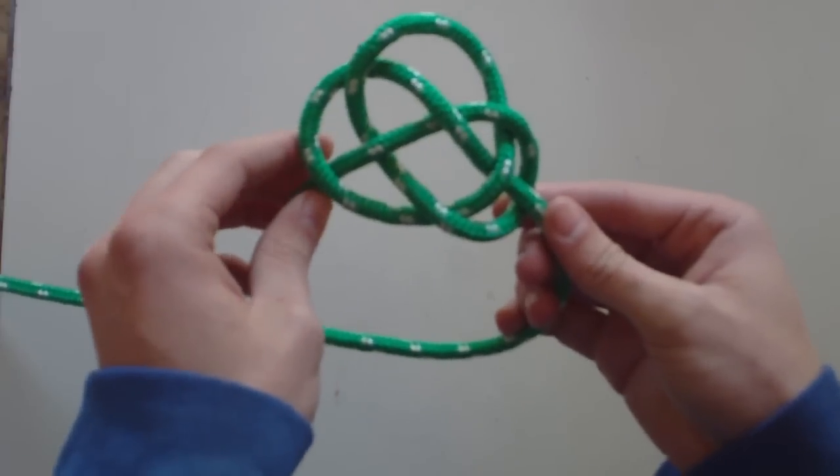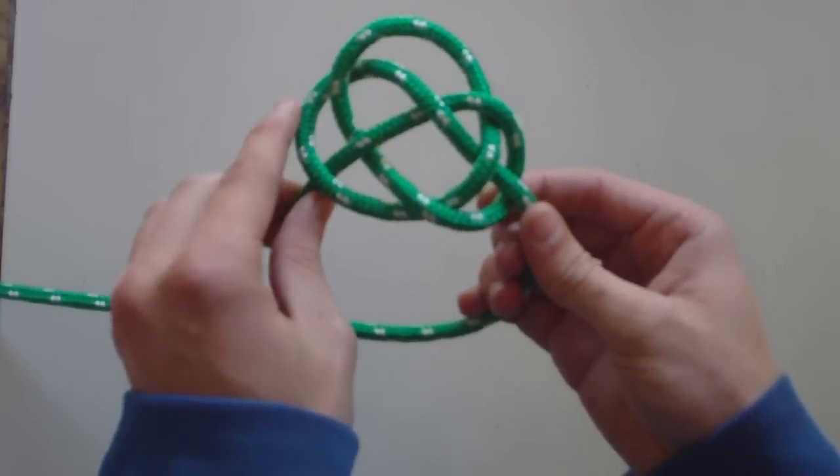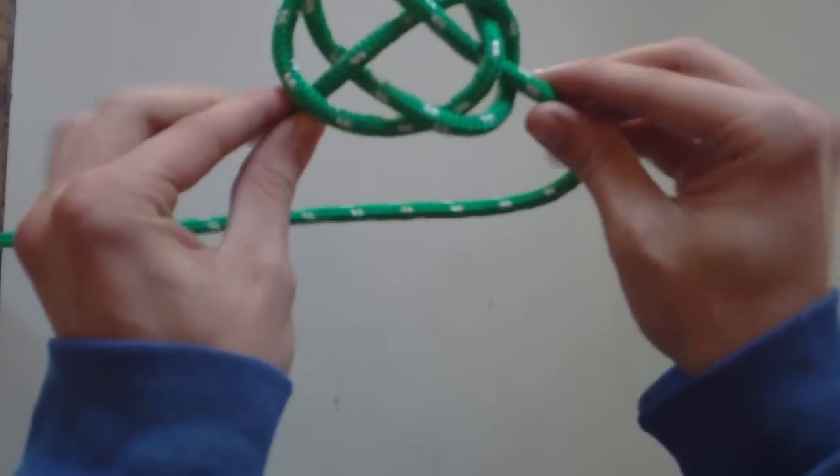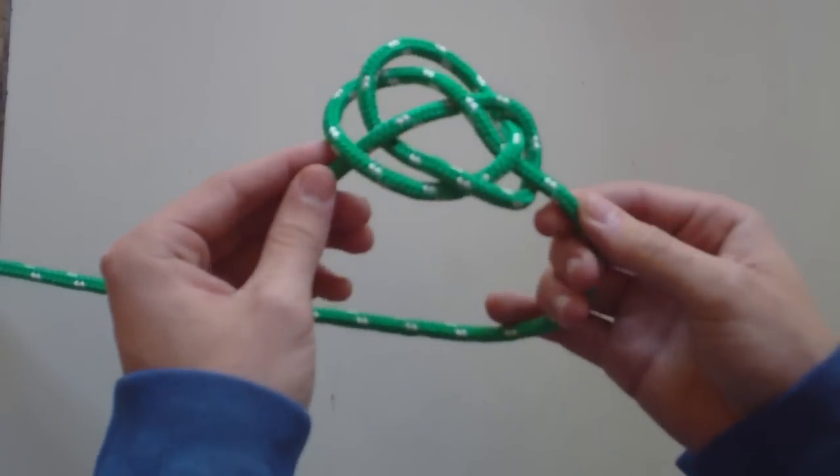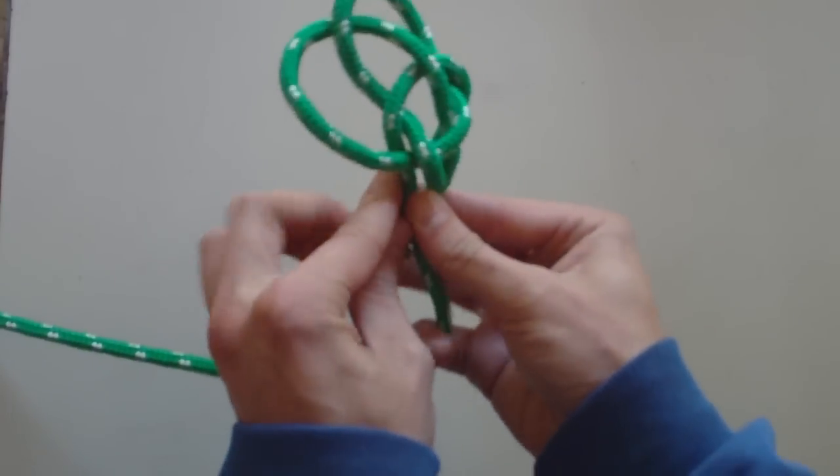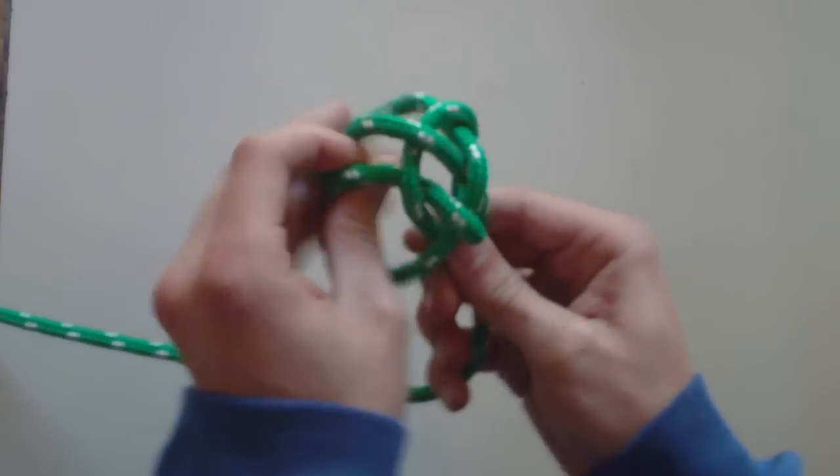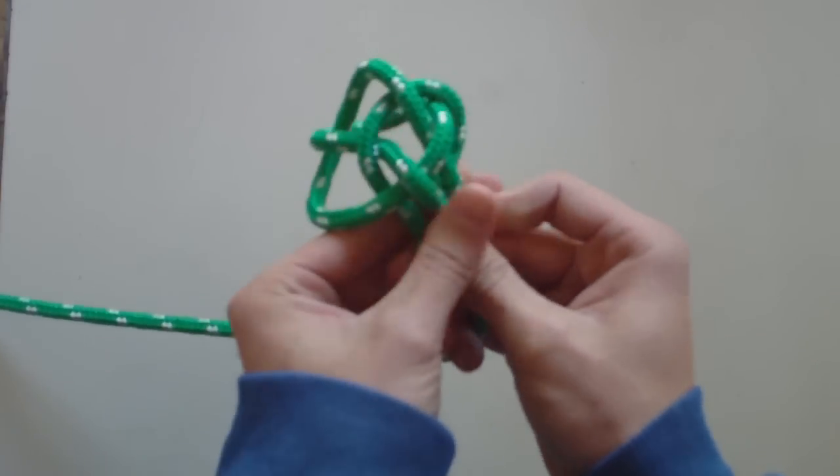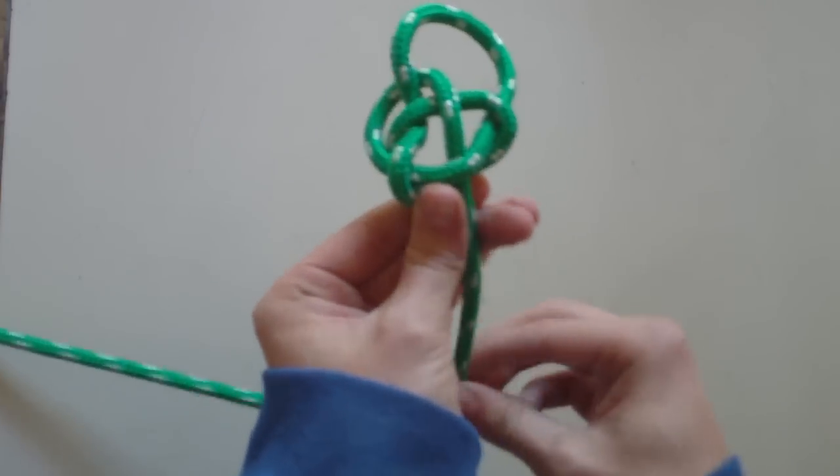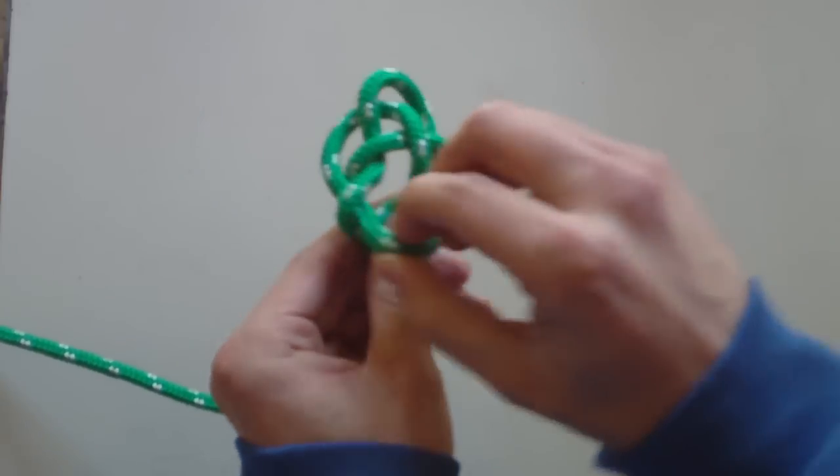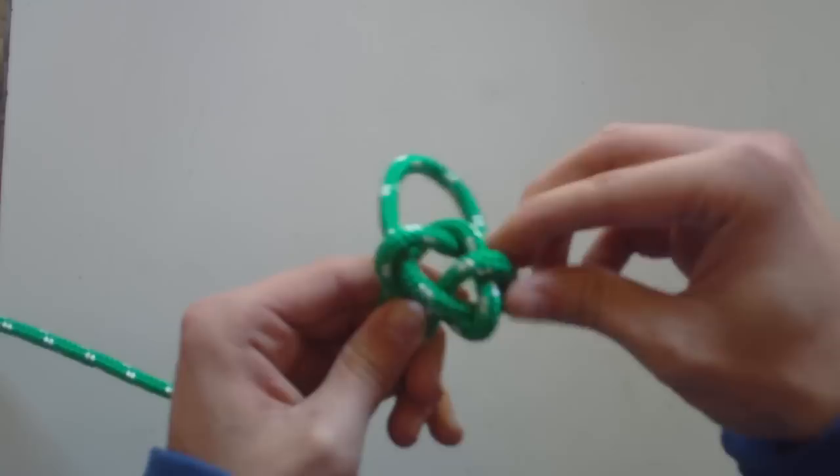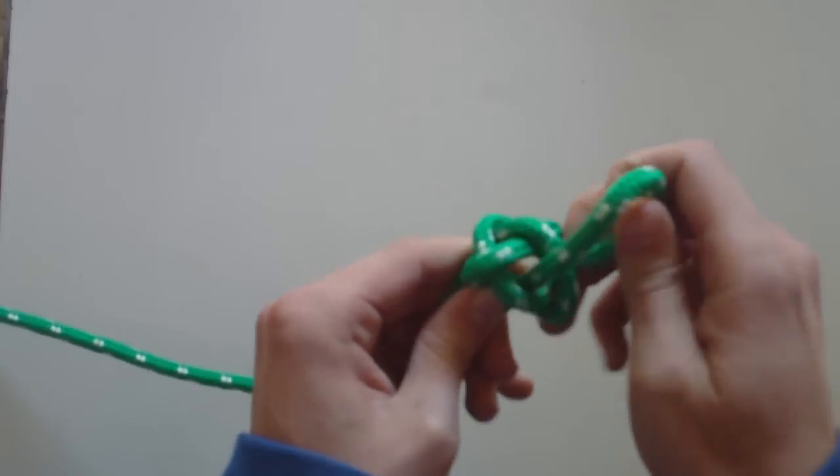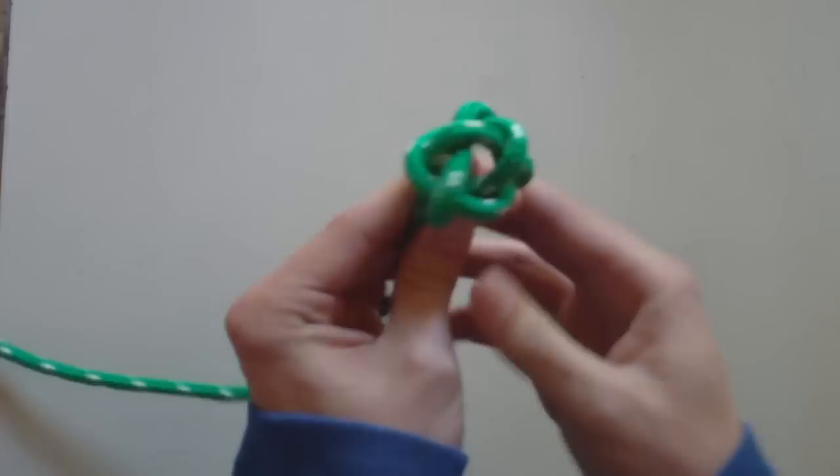And now we're going to tie this knot up to tighten it. So we're going to bring the running end here and the standing part down together. And then we're going to try to pull the strings a little bit, working in the knot. Like that.